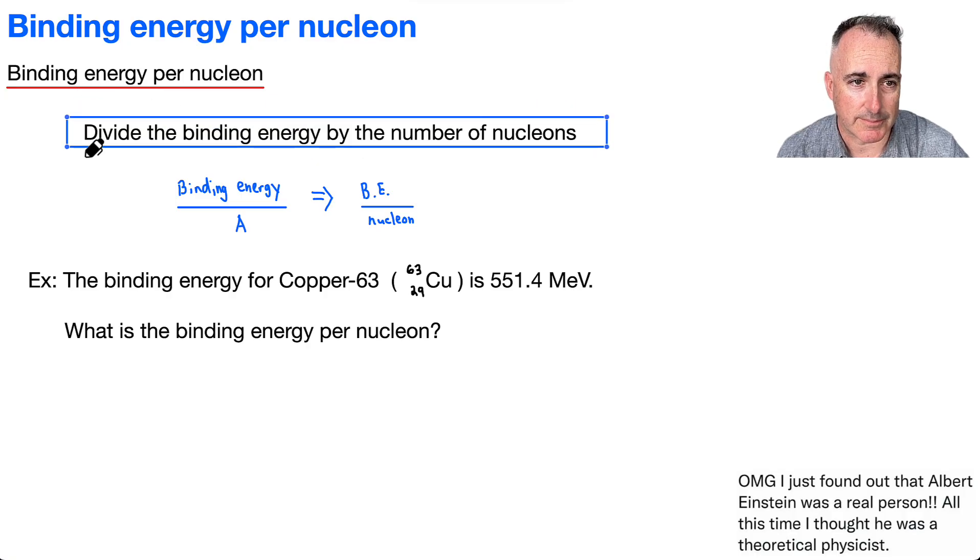So why do we do this? That's because when we do a graph, it really helps to scale it, because binding energy will be more for something that's a really heavy element. But if we divide it by the number of nucleons, we sort of scale it back so we can compare all the different elements. So that's why it's a really good idea to divide it by the number of nucleons.